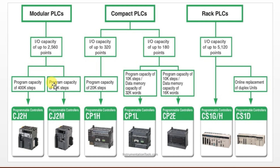As mentioned in a previous section, PLCs are classified depending on size, which mainly depends on the number of IOs, communication protocols, and memory. Here also we categorize Omron PLC types by number of IOs and program memory. The compact type PLC is capable of having 320 IO points, the modular type has 180, and the rack type PLC can have up to 5120 IO points.